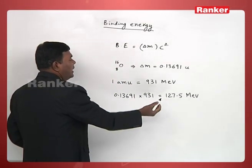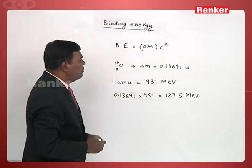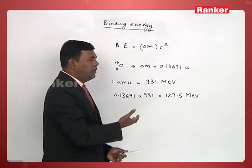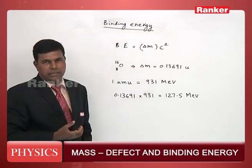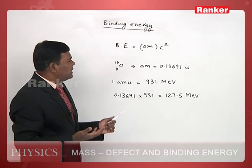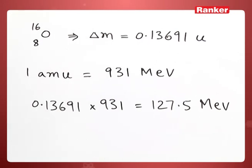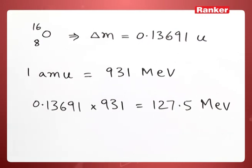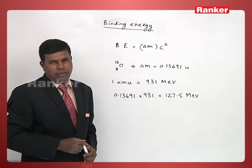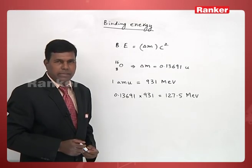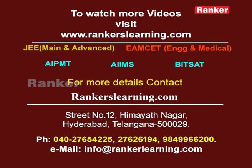This is what we call the binding energy of the oxygen nucleus, which is equal to 127.5 million electron volts. We obtained this by taking the mass defect of the oxygen nucleus and multiplying it by c squared — that gives the binding energy in the case of the oxygen nucleus.